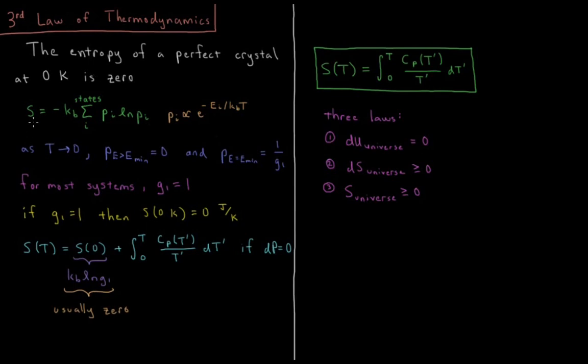We saw from our previous videos on the Gibbs entropy that the entropy was equal to the negative Boltzmann constant times the sum over all states of the probability of the system being in that state times the natural log of the probability of the system being in that state. Those probabilities were determined by the relative energies of those states where the probability is proportional to the Boltzmann factor for that state, e to the minus energy of that state over Boltzmann constant times temperature.